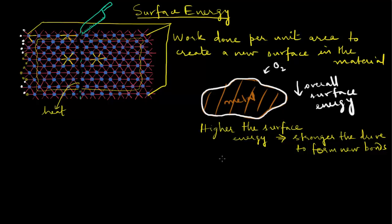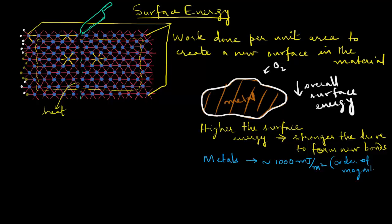If you compare metals and plastics, for example — metals typically have surface energies on the order of magnitude of about 1000 millijoules per meter squared. Notice the units: it is energy spent per unit area, joules per meter squared. There is a range of values for different metals. Plastics, on the other hand — the bonding involved in hydrocarbons is much weaker than in metals, so it's much easier to break bonds, and the surface energy values associated with many plastics are pretty low compared to metals.